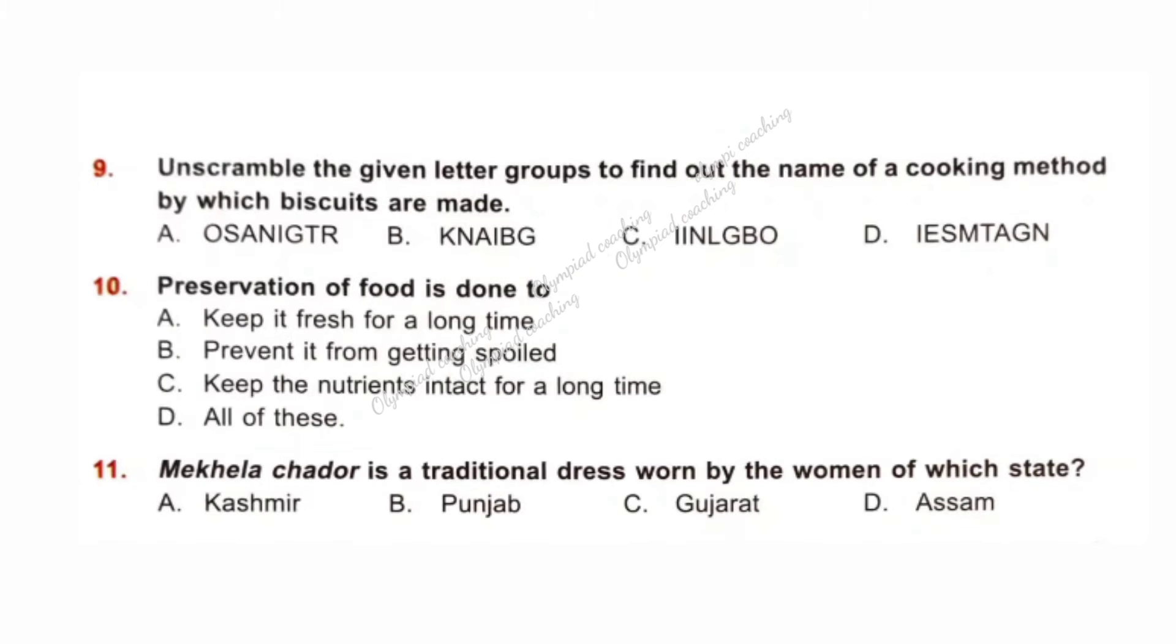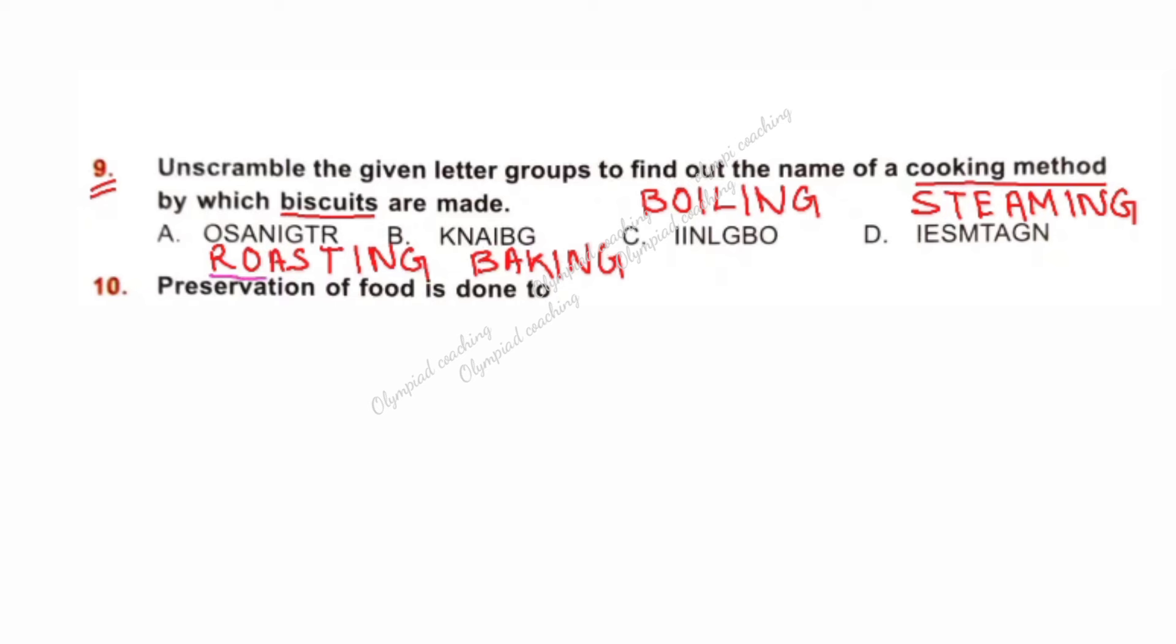Unscramble the given letter groups to find out the name of a cooking method by which biscuits are made. Unscrambling the given letters: Option A, Roasting; B, Baking; C, Boiling; D, Steaming. Cooking method used for making bread is baking. So, option B is correct.